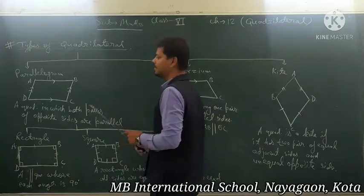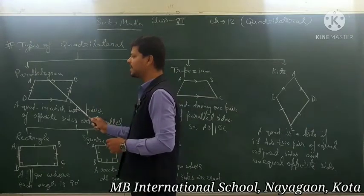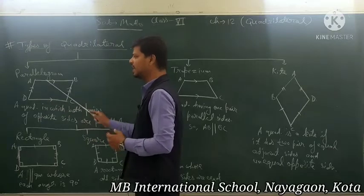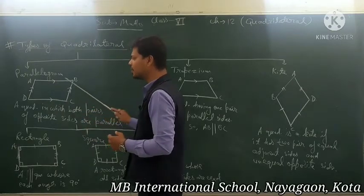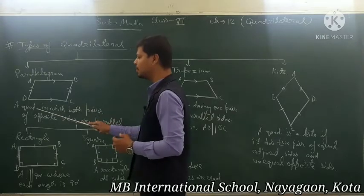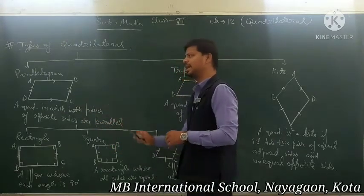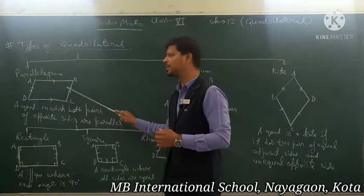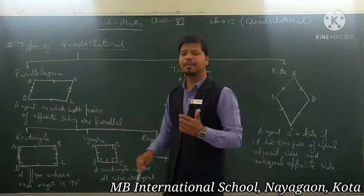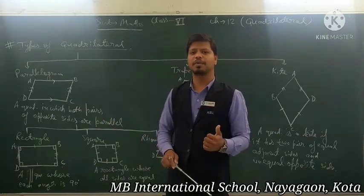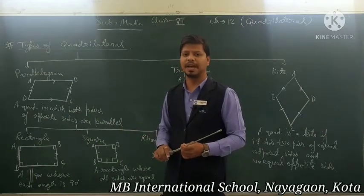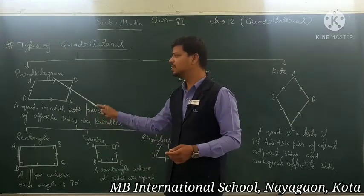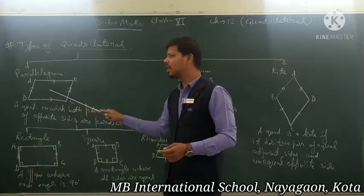If we look at this figure carefully, AB side is parallel to DC — these are opposite sides — and AD side is parallel to BC — these are also opposite sides. It means both pairs of opposite sides are parallel, then it is a parallelogram. So the property of a parallelogram is: both pairs of opposite sides are parallel and both pairs of opposite sides are also equal.